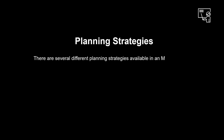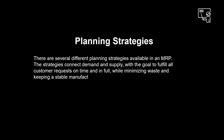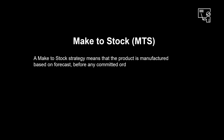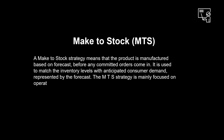There are several different planning strategies available in an MRP. The strategies connect demand and supply, with the goal to fulfill all customer requests on time and in full, while minimizing waste and keeping a stable manufacturing process. Proper use of the planning strategies enables both goals. A make-to-stock strategy means that the product is manufactured based on forecast before any committed orders come in. It is used to match inventory levels with anticipated consumer demand represented by the forecast. The MTS strategy is mainly focused on operational efficiency.